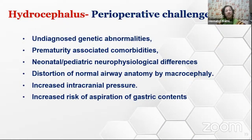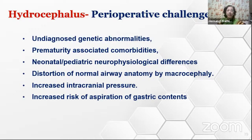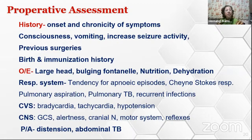When these patients come for surgery, there are multiple perioperative challenges. There may be undiagnosed genetic abnormalities; if the patient is very small, there can be prematurity-associated comorbidities. Neonatal and pediatric populations have their own neurophysiological differences. There can be distortion of normal airway anatomy due to the large head size, and additional problems due to increased ICP and aspiration. During preoperative assessment, one must check: history of onset, effect and chronicity of symptoms, consciousness, vomiting, increased seizure activity, previous surgeries, and birth and immunization history.